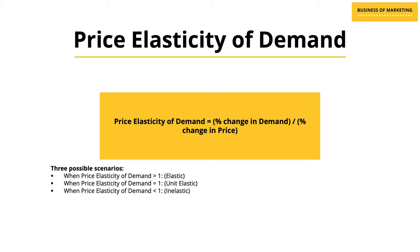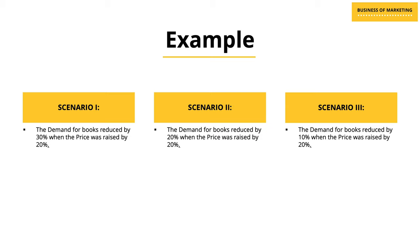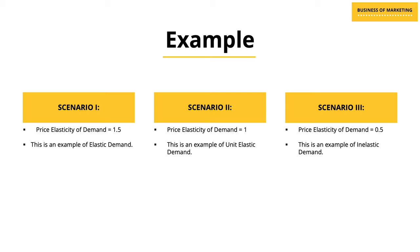There are three possible scenarios. The first is when price elasticity of demand is greater than 1 — known as elastic. When it is equal to 1, it is known as unit elastic. And when it is less than 1, it is known as inelastic. Let's look at three scenarios showing how demand for books from a publisher changed with an increase in price. In the first scenario, demand reduced by 30% when price was raised by 20%. In the second scenario, demand reduced by 20% when price was raised by 20%. Therefore, price elasticity of demand in scenario one is 1.5 — elastic demand. In scenario two it is 1 — unit elastic. And in scenario three it is 0.5 — an example of inelastic demand.